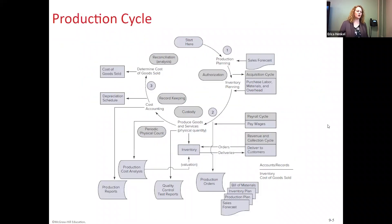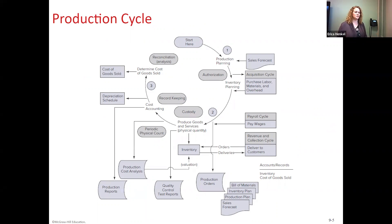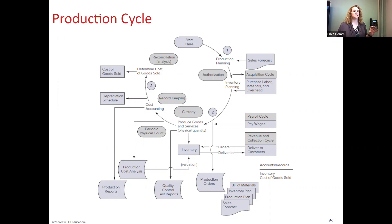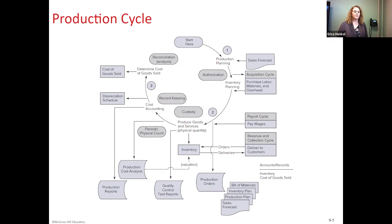We have a flowchart here that talks about the different documents and activities going on in the production cycle. The whole process starts out with production planning. The company has to come up with a sales forecast for what they think they're going to sell, which you probably covered in managerial and cost accounting. They create these sales forecasts so they know how much they need to produce, and then they look at their raw materials listing and existing supply to determine what they need to purchase. The ideal outcome is to have just a little bit left over at the end of the production cycle.